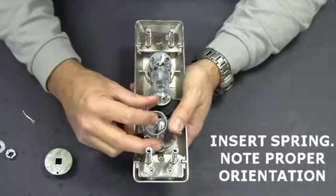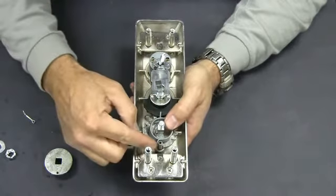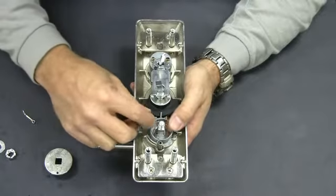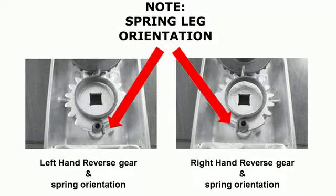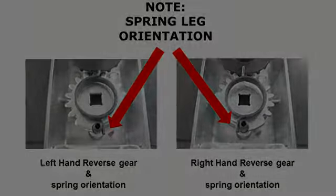Reinstall the spring opposite of the original orientation. Again, for this demonstration, install the spring for right hand reverse trim. Note that the bottom leg of the spring will always be on the same side as the handle.